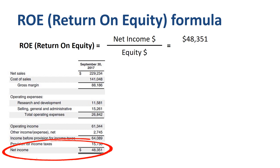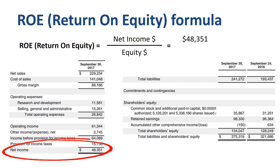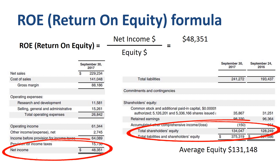To find the equity number, you need to turn to the right hand side of the balance sheet. Usually the average of the starting and the ending equity number of the year is used. In the case of Apple, $131 billion. You divide the two numbers, and there's your ROE number of 37% for 2017.